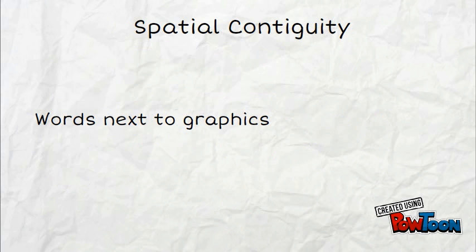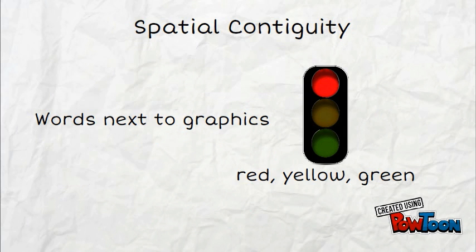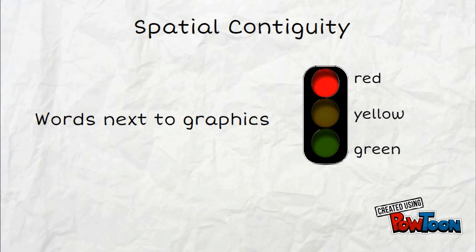Next is spatial contiguity. Place essential words next to the corresponding graphics. Users should not have to guess what text is labeling. Text should be placed next to the elements they are describing, and captions should be unambiguous.